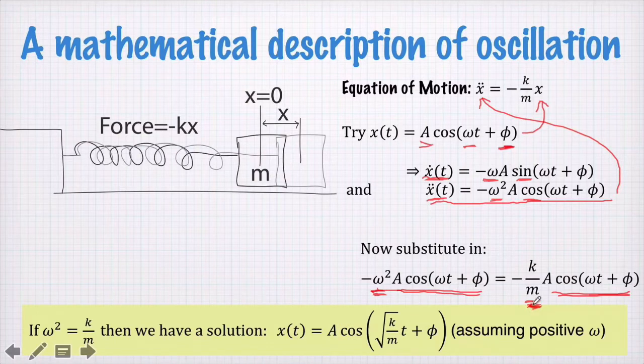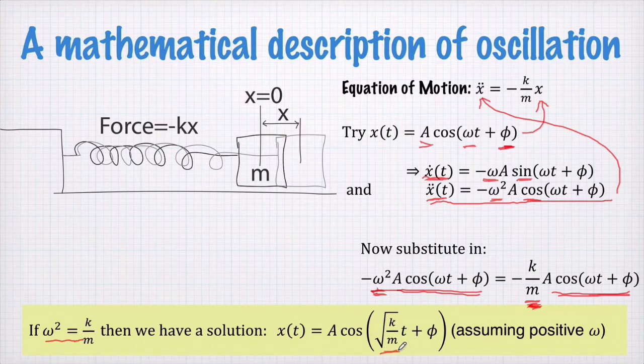So if ω² is equal to k/m then we have a solution which is that x(t) is equal to A cos(√(k/m)t + φ). And I've assumed here a positive frequency. We could take a negative frequency but a positive frequency makes more sense I think.